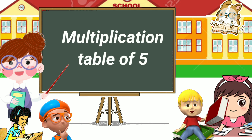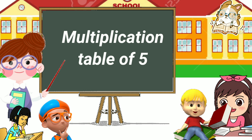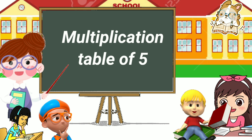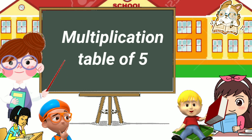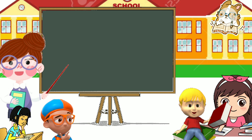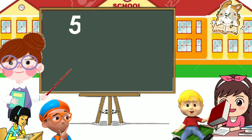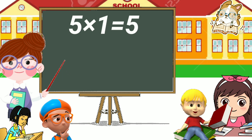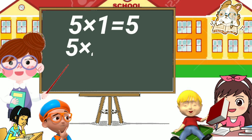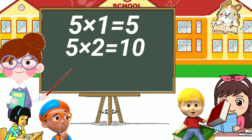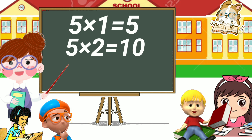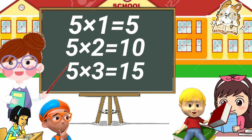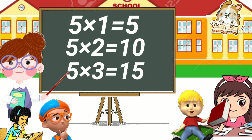Let's learn the multiplication table of five. Five one has five, five two has ten, five three has fifteen.